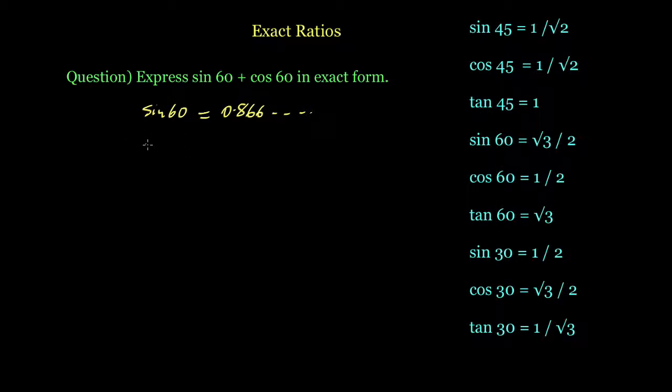Over here cos 60, if we type that into our calculator, we get 0.5. So sin 60 plus cos 60, the best answer we could come up with using our calculator is 1.366. And once again we have another irrational number, so we wouldn't have this in exact form.